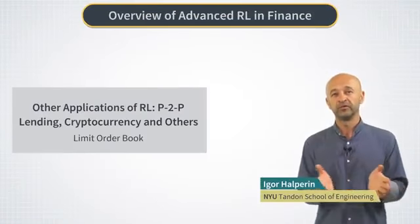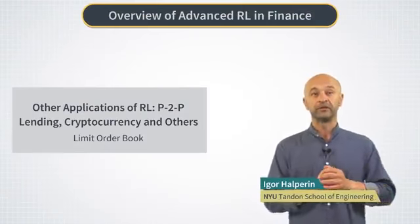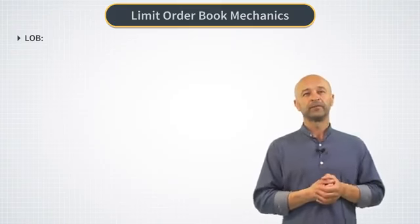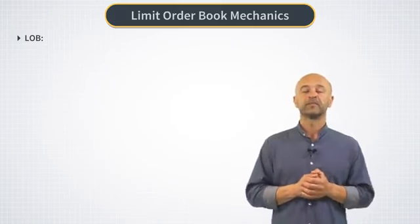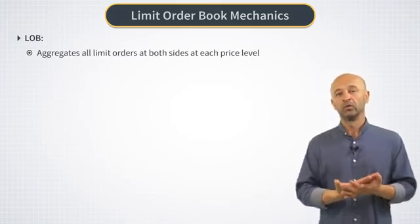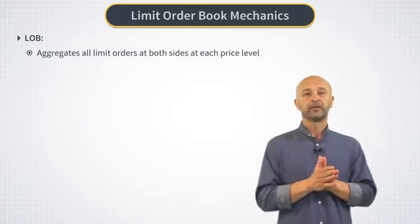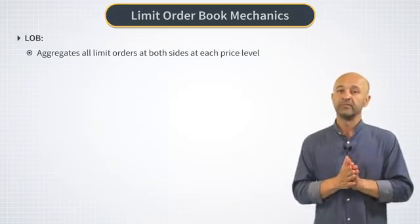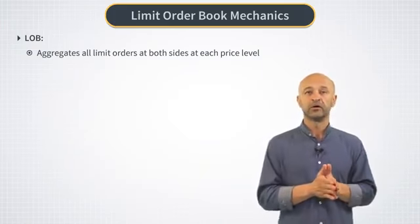Let's talk a bit more about the limit order book that we already mentioned in the last video. As we already mentioned, the limit order book is the heart of an electronic exchange. It aggregates all limit orders on both the buy and sell sides at each price level. Price levels are measured in ticks, which are elementary units of price.